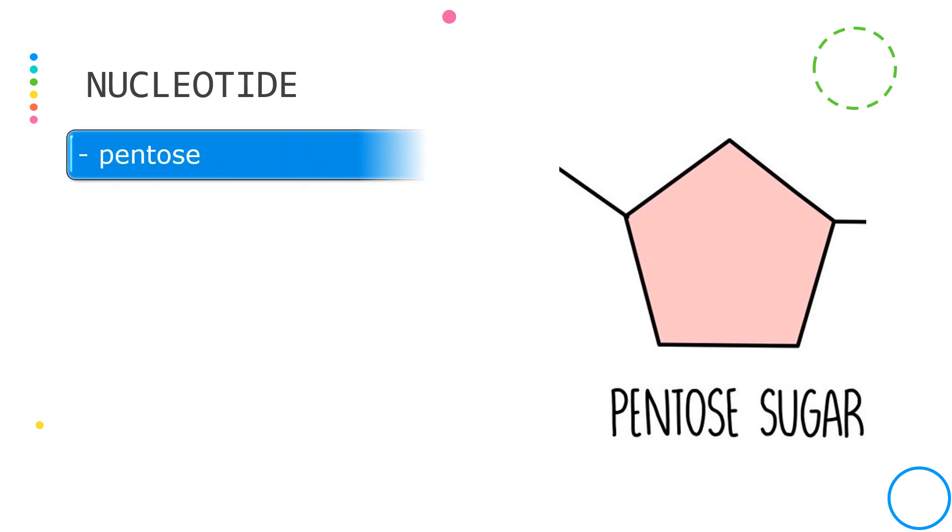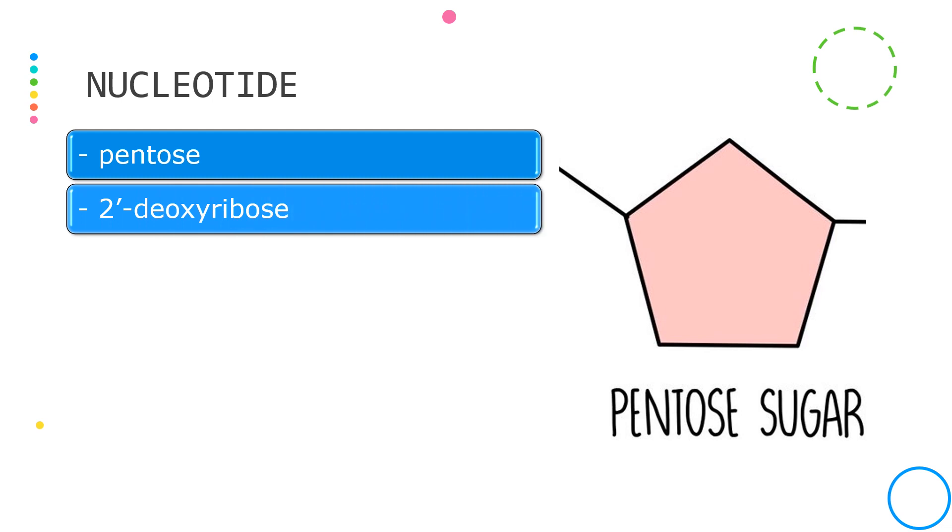The sugar component of the nucleotide is a pentose. The particular type of pentose present in the nucleotides found in DNA is called 2-deoxyribose.